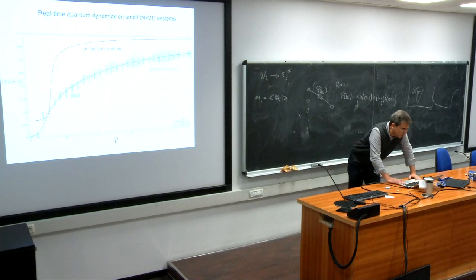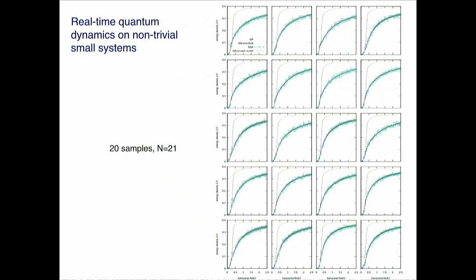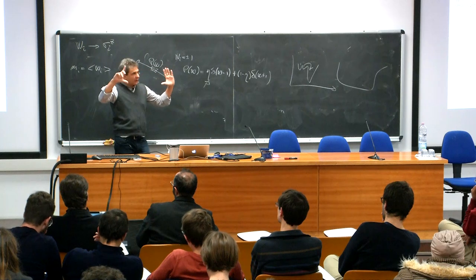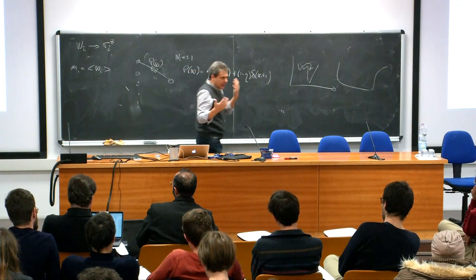A referee asked us to do the real quantum dynamics. With modern software and with Carlo Baldassi, we analyzed the dynamics and found everything consistent with the analytic calculations. We could also verify that if you take the original problem and randomly permute the energy levels — scrambling and getting rid of all geometry — quantum annealing on this reshuffled system shows exponential slowdown and fails.